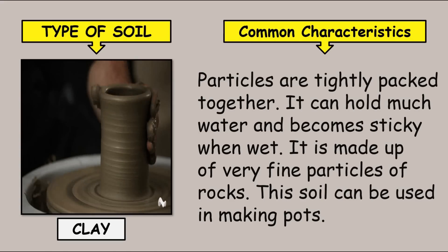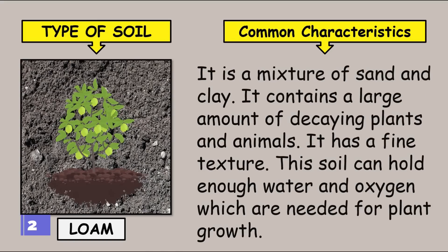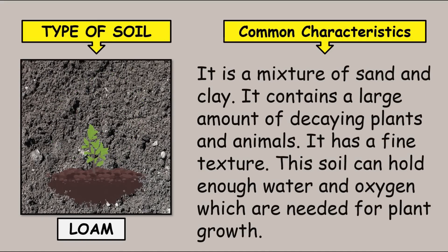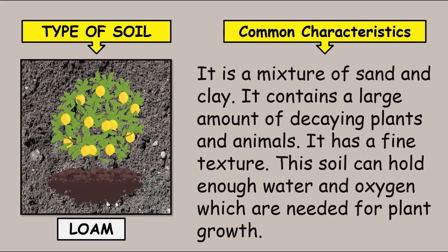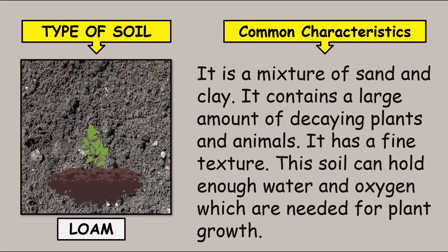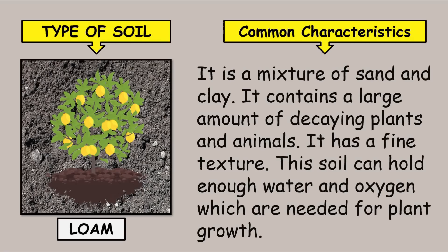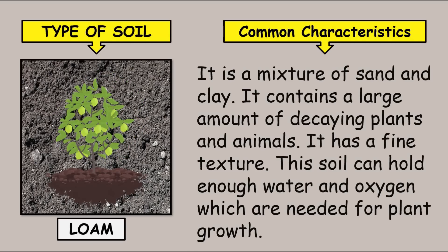This soil can be used in making pots. The second one is loam. It is a mixture of sand and clay. It contains a large amount of decaying plants and animals. It has a fine texture. This soil can hold enough water and oxygen which are needed for plant growth.